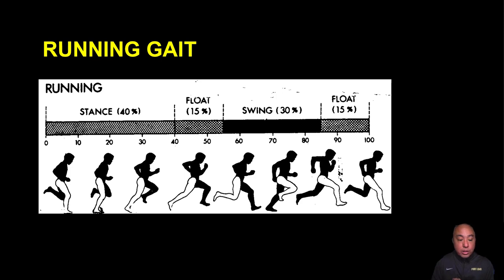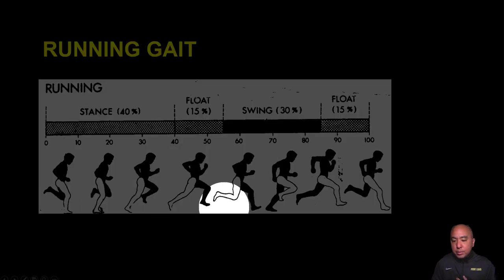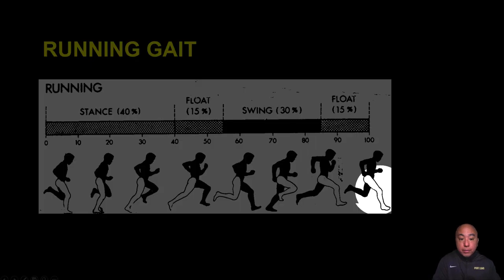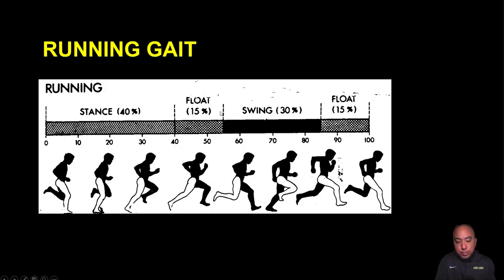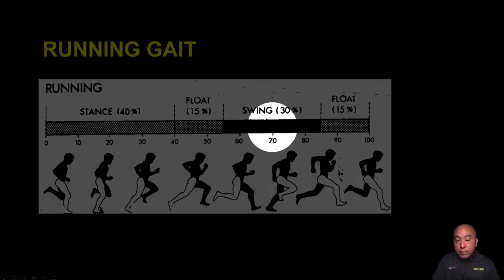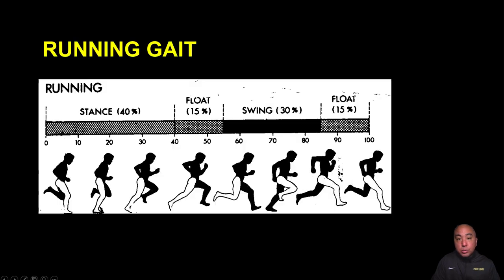This is the running gait cycle — one stride from a foot strike on the right side to foot strike again on the same side at 100%. Stance phase is 40% of the gait cycle. After right toe-off it goes into the first double float phase, which occurs at roughly 15% of the gait cycle. Both legs are off the ground, then the contralateral leg contacts the ground while the right side swings forward, approaching terminal swing as the contralateral leg goes into its respective swing phase.